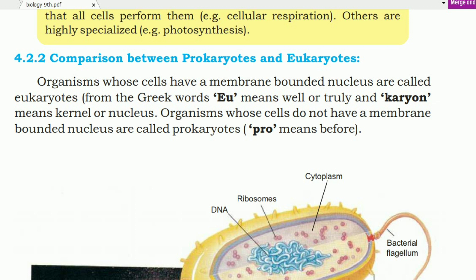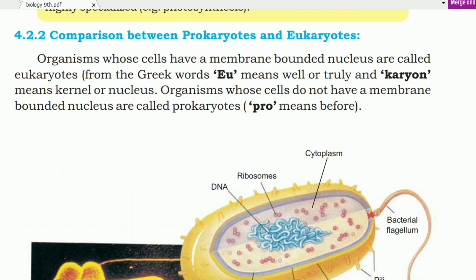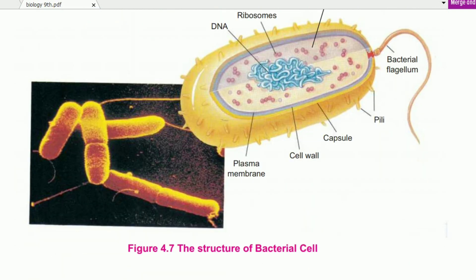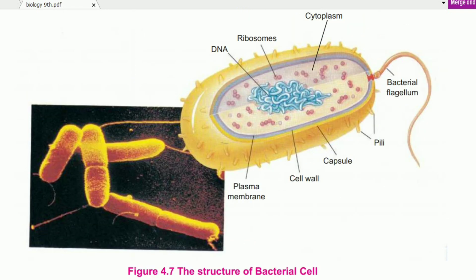Prokaryotes means 'before nucleus.' Here is a bacteria cell which we can see. The blue part is DNA. Then the pink dots are ribosomes.